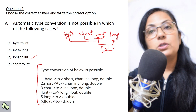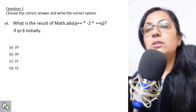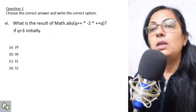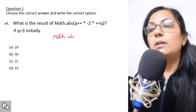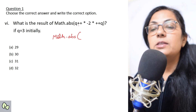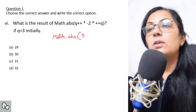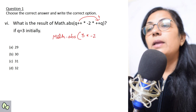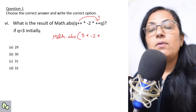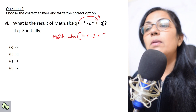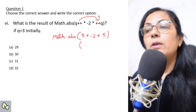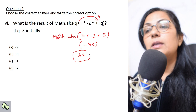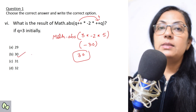What is the result of Math.abs(q++ * -2 + ++q) if q equals 3 initially? Solving step by step: q++ uses 3 then increments to 4; multiplied by -2 gives -6 then +4 (from ++q which pre-increments to 5 — wait, the value received is 5 post the increment), giving -30. Math.abs(-30) returns 30. The abs function returns the absolute value — it removes the sign and returns only the magnitude.